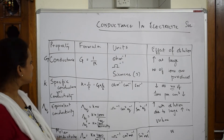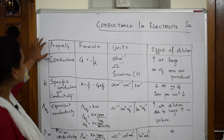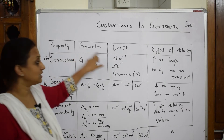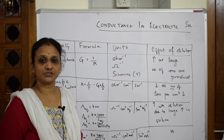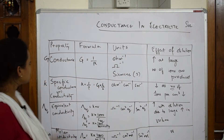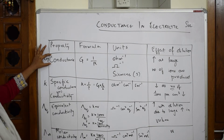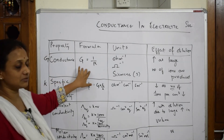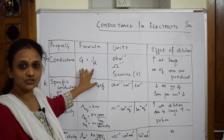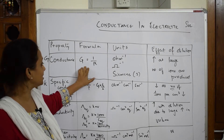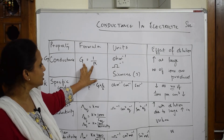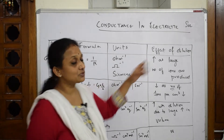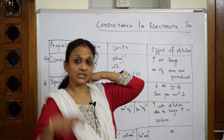In this tableau I've written the property, then the formula, then the units, and then the effect of dilution. For the first concept — conductance, denoted by G — the formula shows conductance is inversely related to resistance, so the units are ohm inverse.